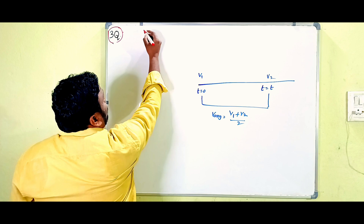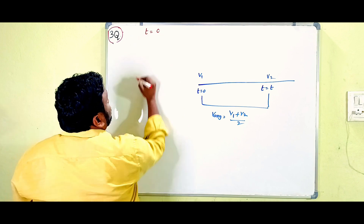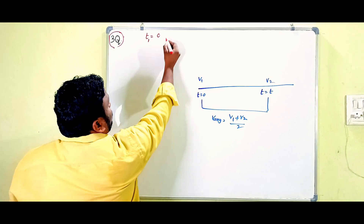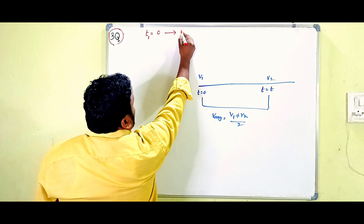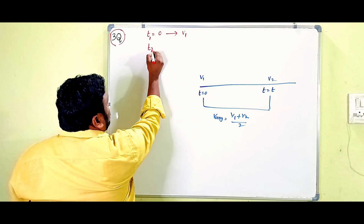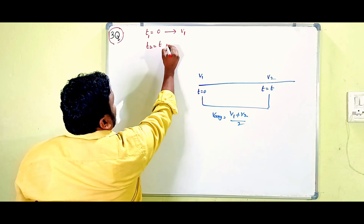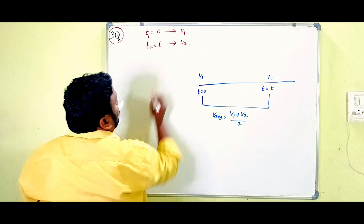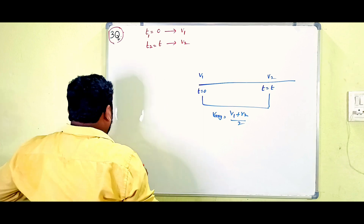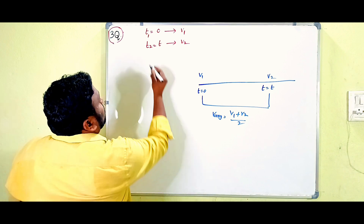From the given data: at time t1 equals zero, the velocity is v1. At time t2 equals T, the velocity is v2. And it is given that the particle is moving with uniform acceleration.